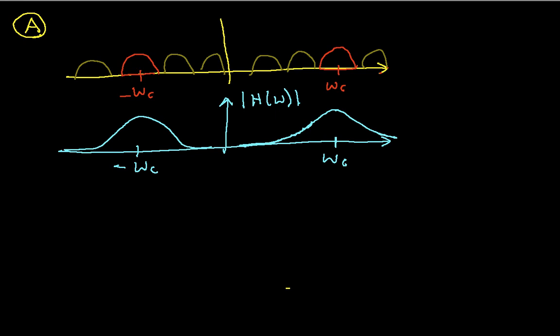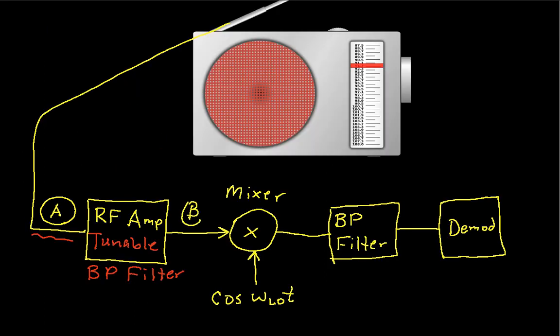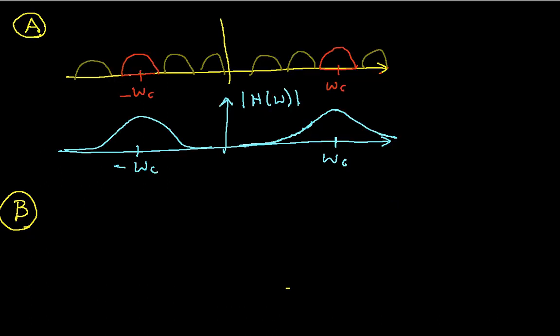So the output of this RF filter, which I'll label B and we'll show where this is on the AM radio right here, is going to be the product of the frequency content going in and the frequency response. So you can see that my station that I'm interested in comes through this filter pretty much unscathed.